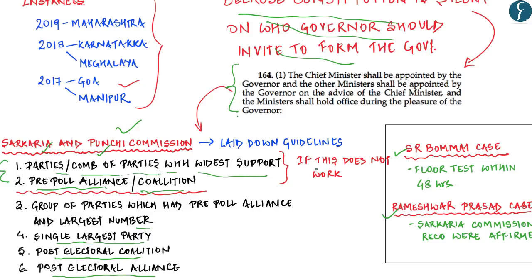Under the S.R. Bommai case — the most important case for central-state relations — the judgment emphasized a floor test within 48 hours. The key principle is that the proper course for testing the strength of a ministry is the floor test; that alone is the constitutionally ordained forum. Even though this verdict was in the context of imposition of President's Rule, the principle holds good for any situation in which governors have to decide on the appointment of a chief minister or continuance of a regime based on its numerical strength in the house.